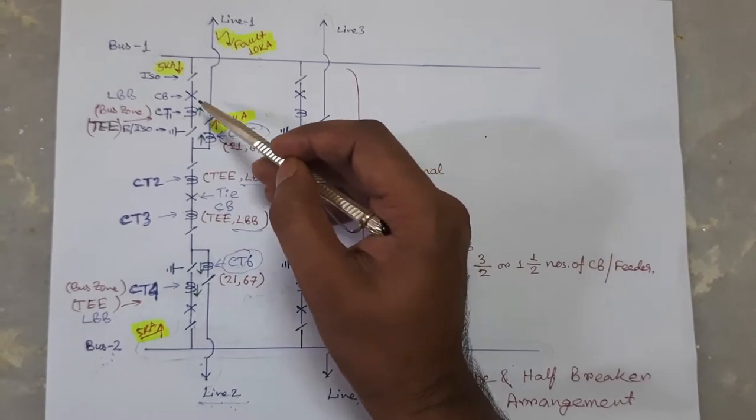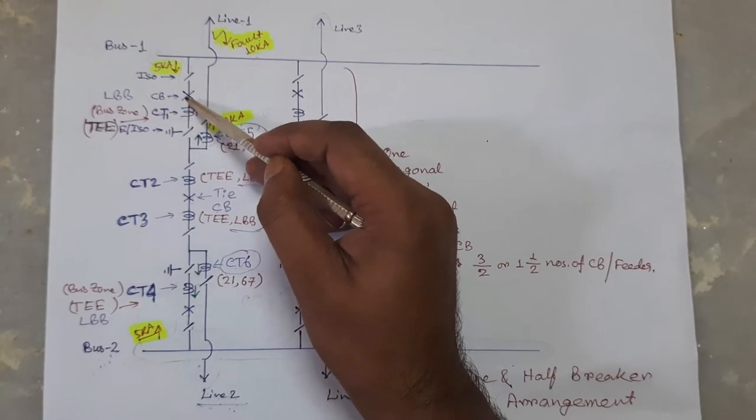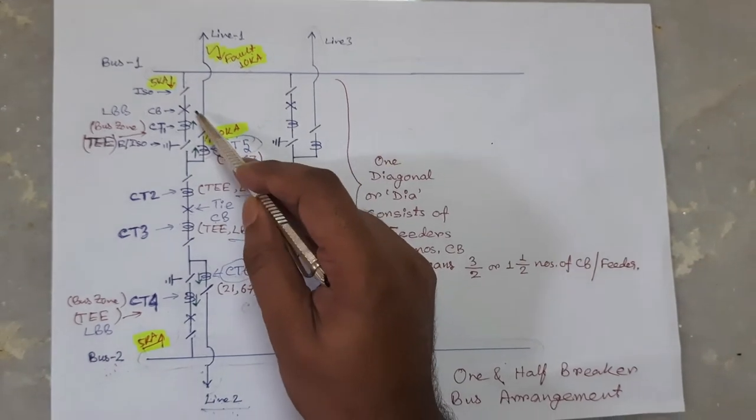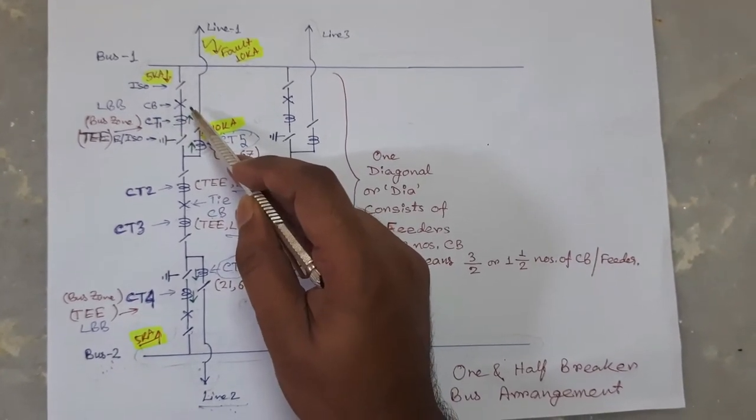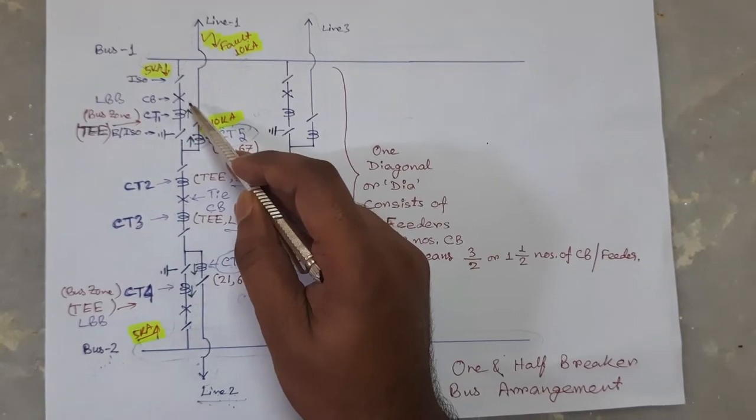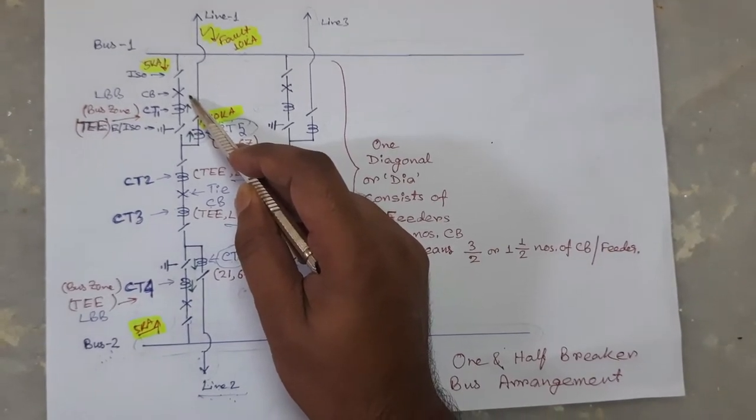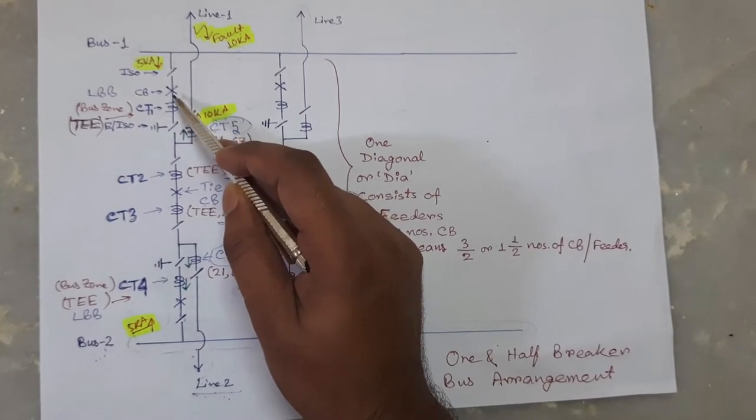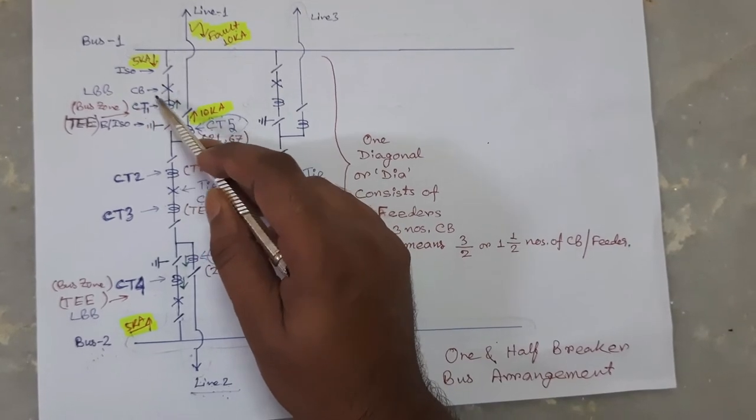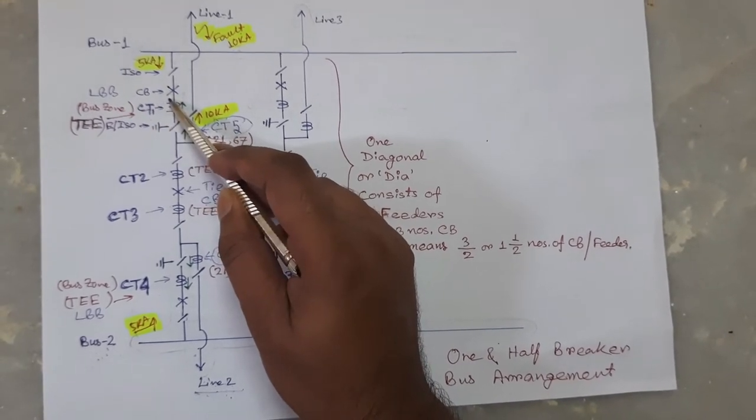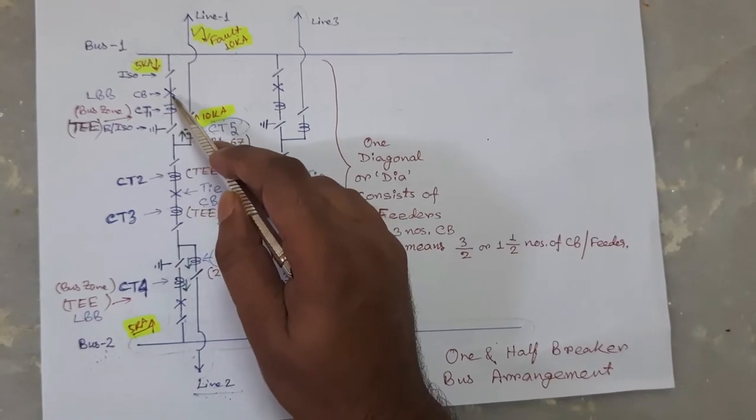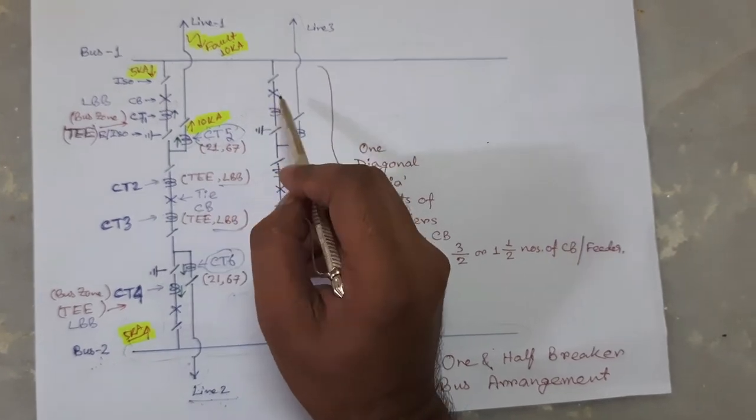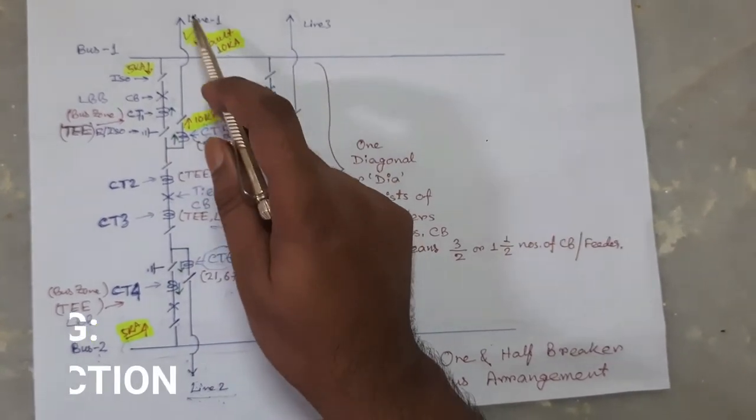distance protection also initiates main LBB protection as well as tie LBB protection. After initiation of main LBB protection, it starts its timer and waits for a predefined time delay, say 200 millisecond, with a hope that circuit breaker will successfully clear that fault. But if the circuit breaker fails to clear the fault, then LBB protection will operate and it will trip all other circuit breakers which are sourced to the uncleared fault.